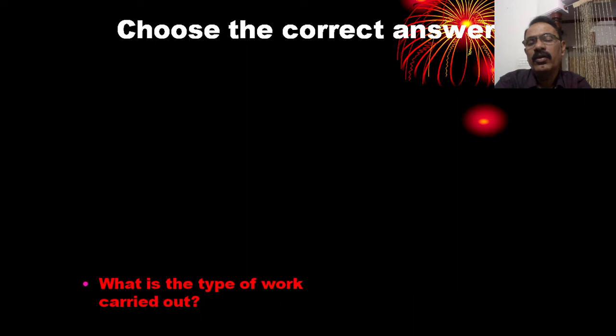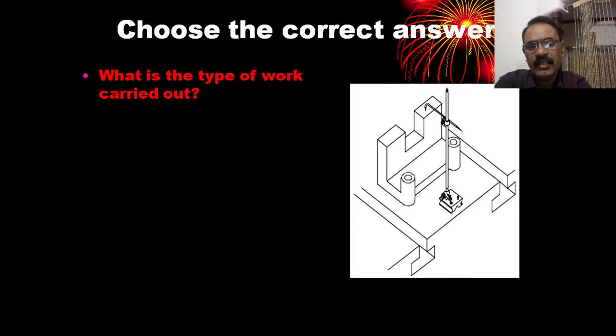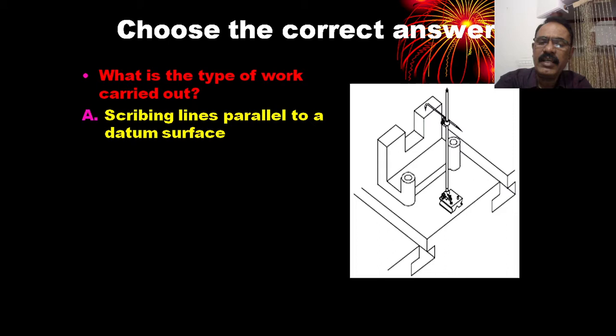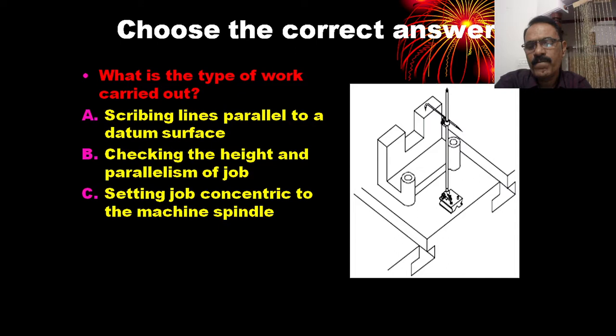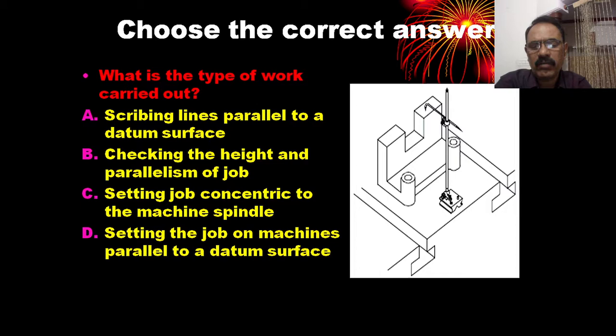What is the type of work carried out? Scribing lines parallel to a datum surface; checking the height and parallelism of the job; setting the job concentric to the machine spindle; setting the job on machine parallel to the datum surface. D is the correct answer.